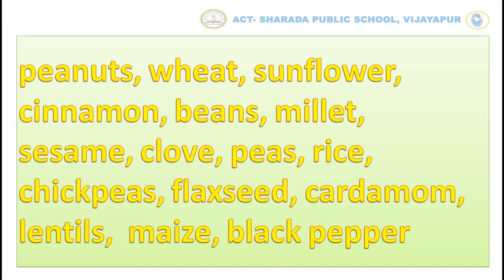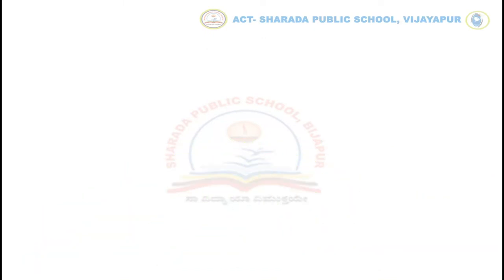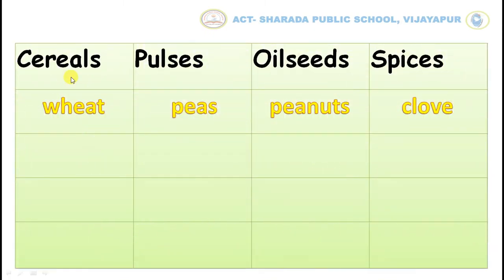Let us classify them. Look at the table. You have to classify them into cereals, pulses, oil seeds and spices. For example, wheat is a cereal. Peas are pulses. Peanuts are oil seeds. Clove is a spice. In the same way, you have to complete this table.